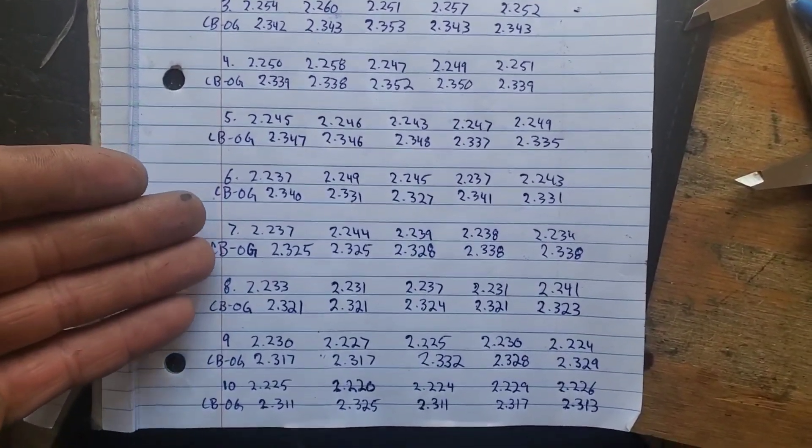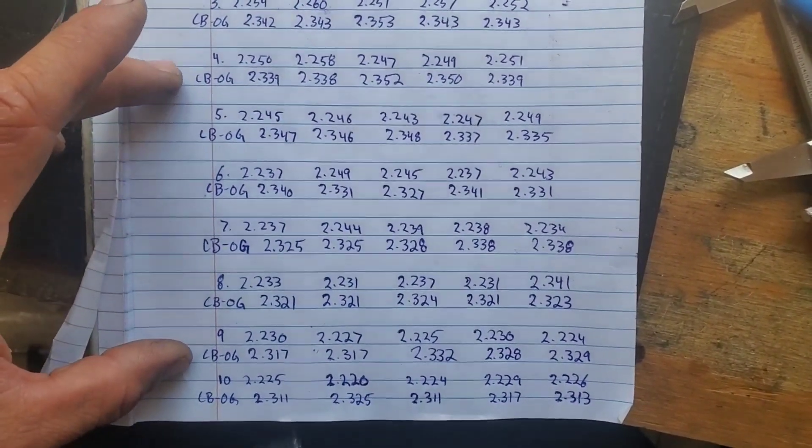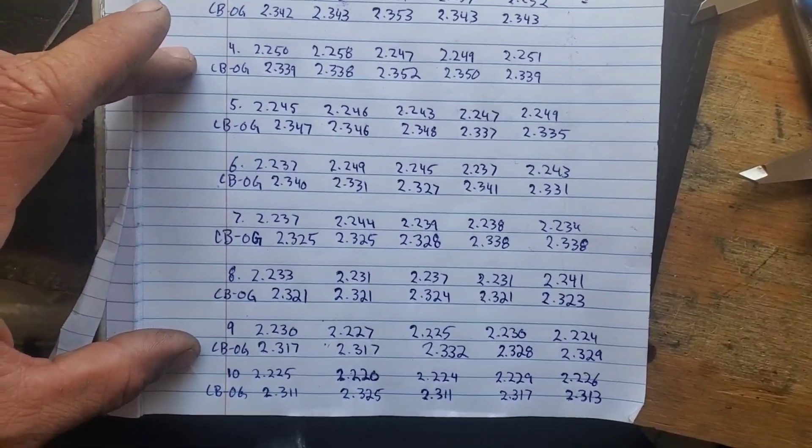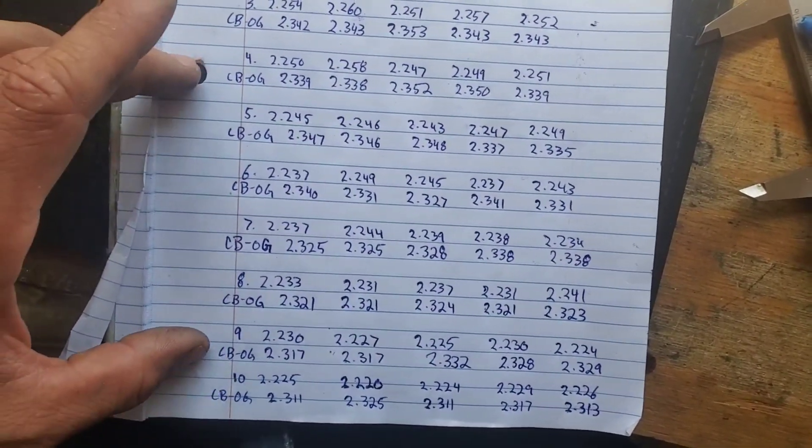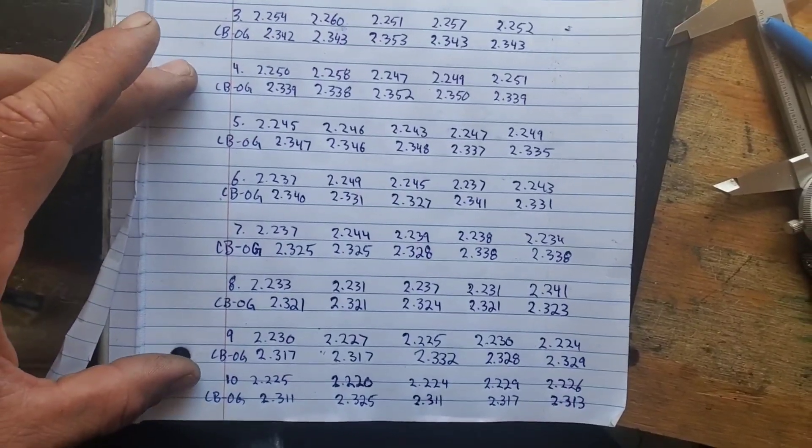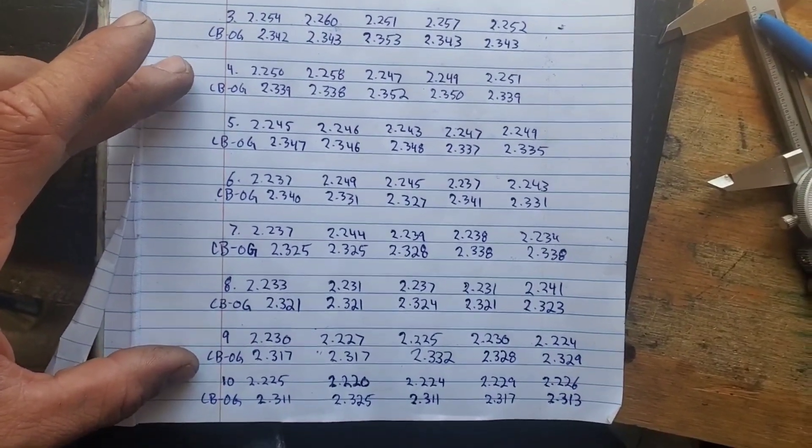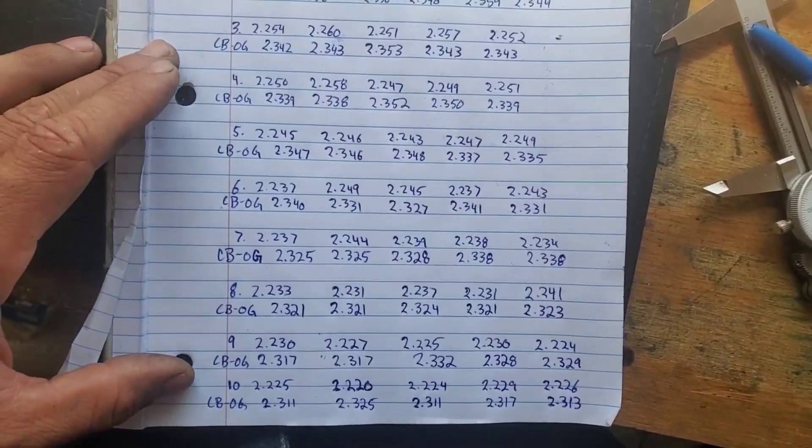I don't expect these to be super consistent. They said right on their website that their machine is not technically supposed to make bullets this long, but they did a little finagling and wizardry and were able to do it. I do not expect these to be the most consistent bullets on earth, but I expect to be able to get these to shoot somewhere around an inch, maybe an inch and a half. And I'm going to try to do that.